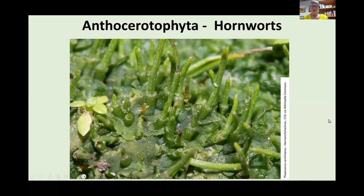Hornworts and thalloid liverworts look very similar to thalloid liverworts at a glance, but the main difference is in the way they reproduce. The reproductive structures are much simpler and less structured than liverworts' — they are these green horns, which is probably where the name hornworts comes from.